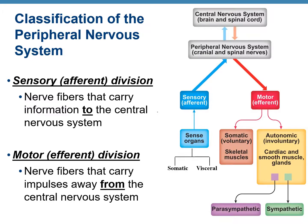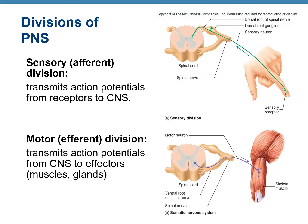The PNS can be further classified into the sensory and the motor division. The sensory division includes nerves that carry signals toward the CNS, while the motor division includes nerve fibers that carry signals away from the CNS. For example, when you touch something hot, the electrical signal is transmitted by the sensory division from your skin to the CNS. Once processed, a command is transmitted by the motor division from the CNS to the effector organ — such as the muscles in your arm that contract and make you pull your finger away.